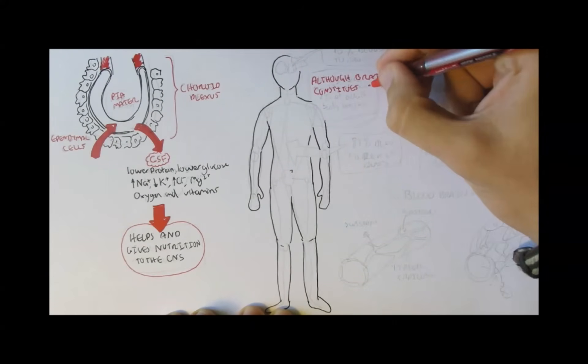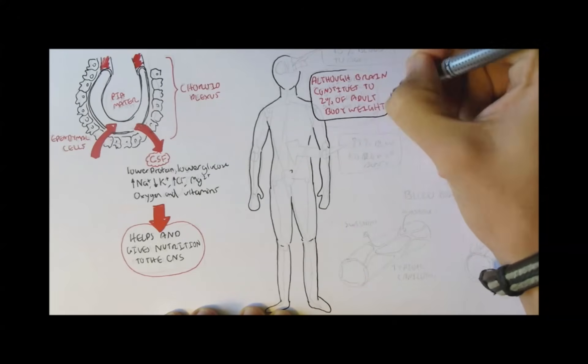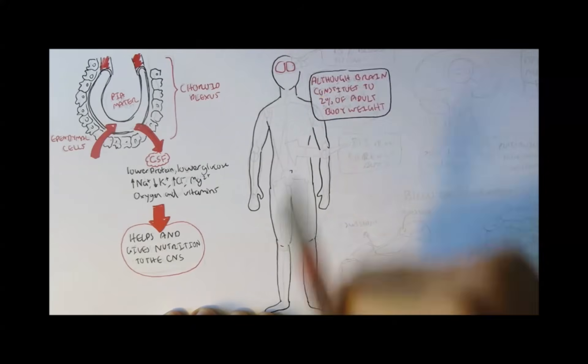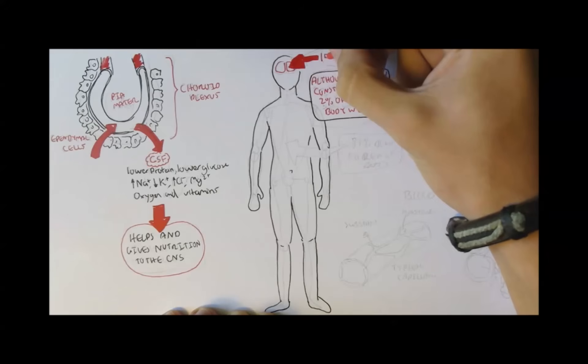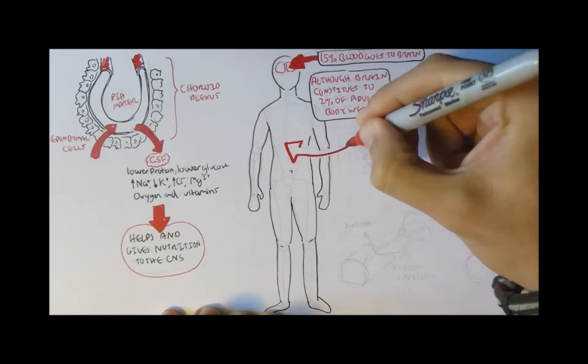Although the brain constitutes only 2% of the adult's whole body weight, it requires 15% of the blood from the body. This means that 85% of the blood goes to the rest of the body, and 15% goes to the brain.